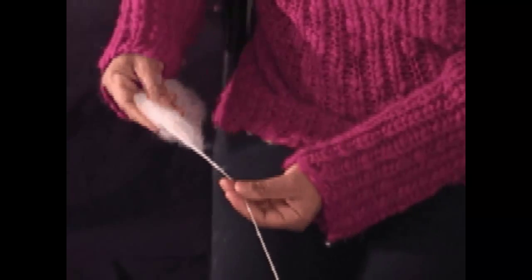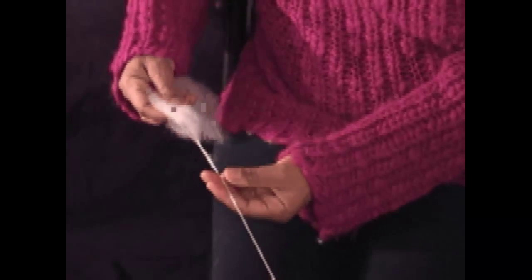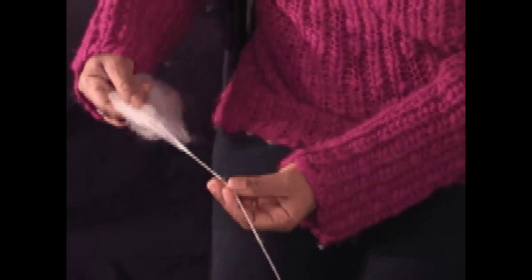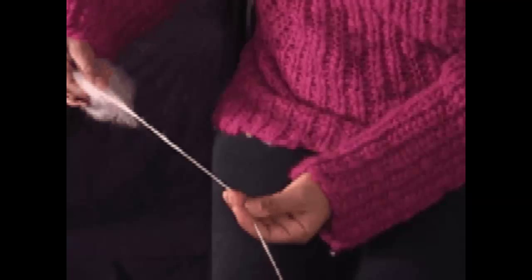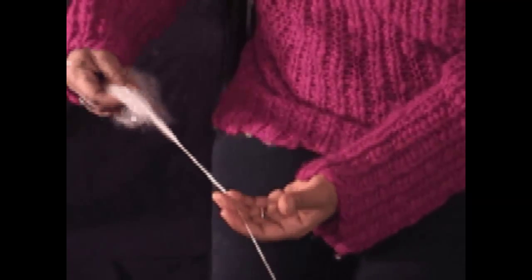Pull the back hand away from the orifice of the wheel and let the fiber draft out. Allow the twist to run into the drafted fibers. Treadle at a momentum that will allow you to stay ahead of the twist.